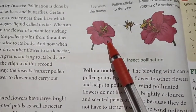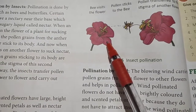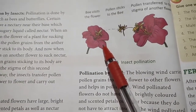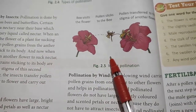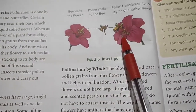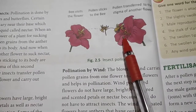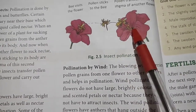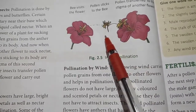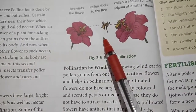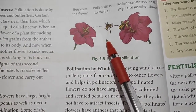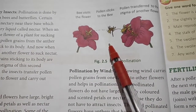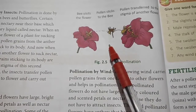Pollination is done by insects, wind, and water. Pollination by insects — like bees and butterflies. The insect-pollinated flowers have large, bright-colored and scented petals so that they can attract insects for pollination. Examples include sunflower, marigold, jasmine, and bougainvillea — they have large bright-colored petals.